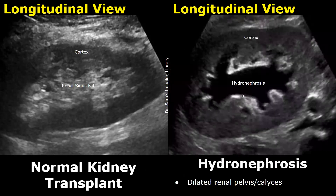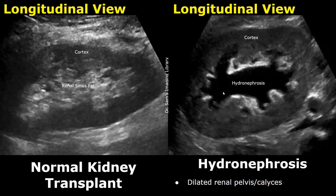Now we will compare the normal images with pathologies. The first case is hydronephrosis, in which we will find dilated renal pelvis and calyces. Depending on the extent of hydronephrosis, the appearance in a transplant kidney is similar to that of a native kidney.